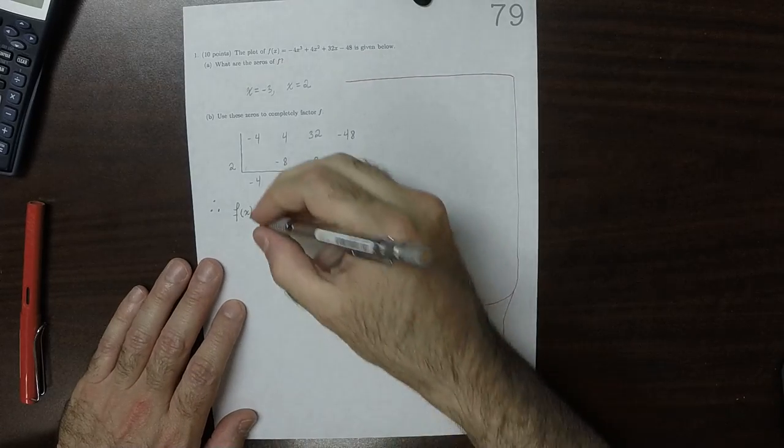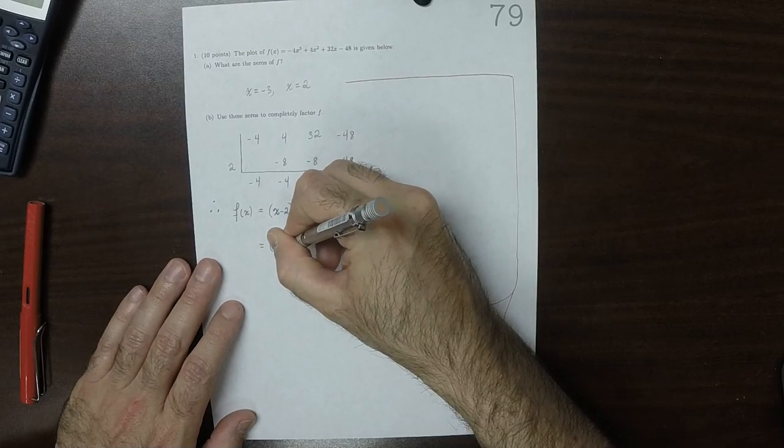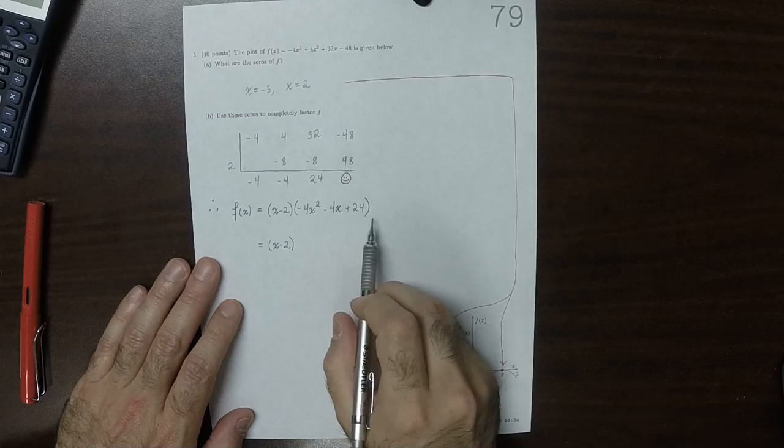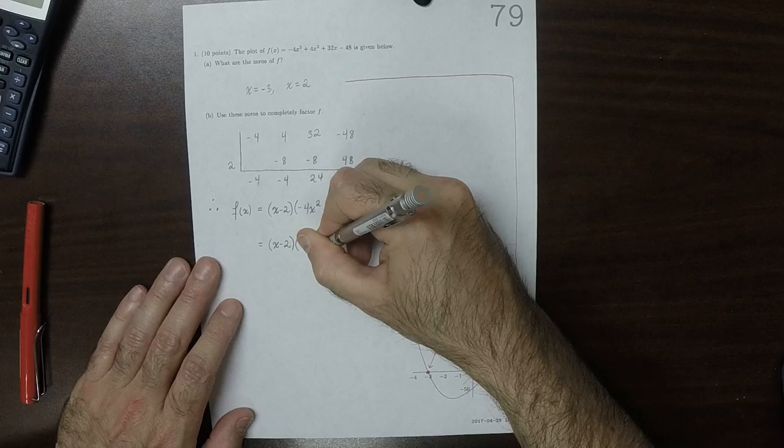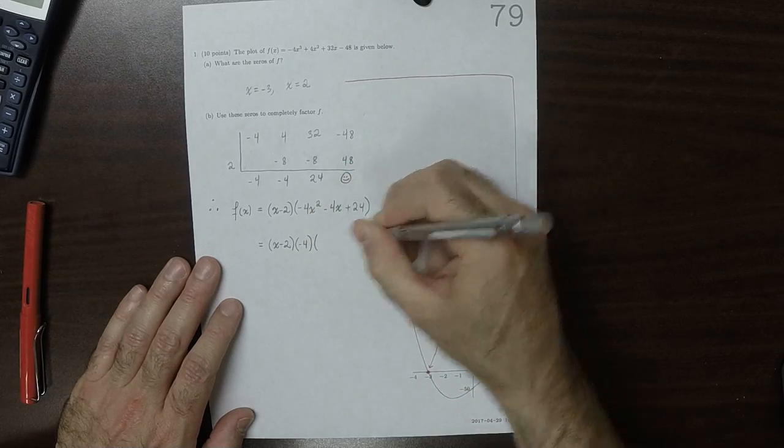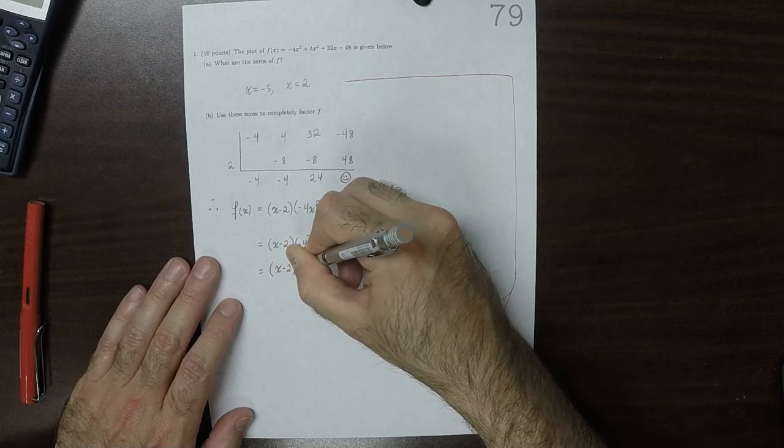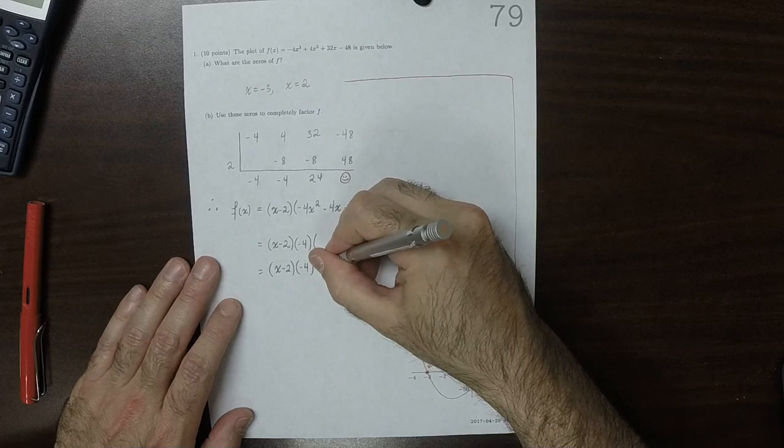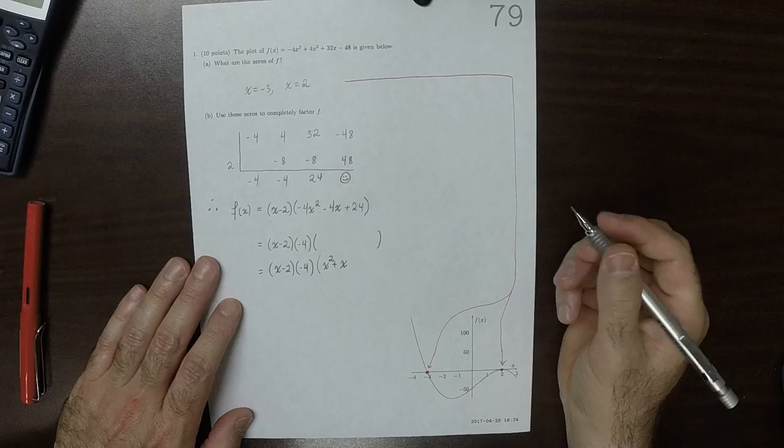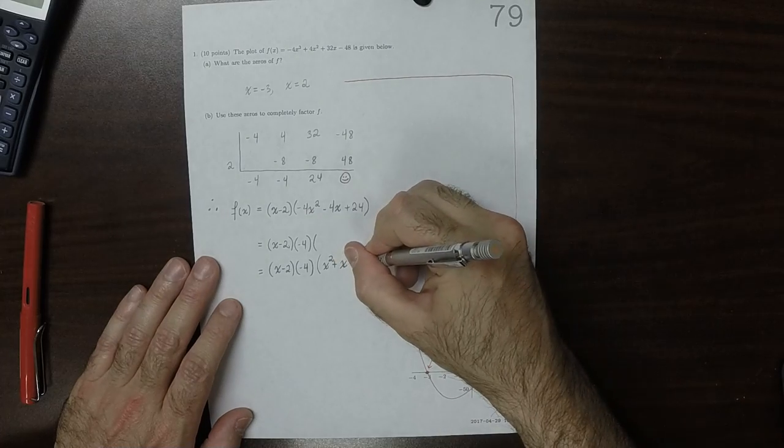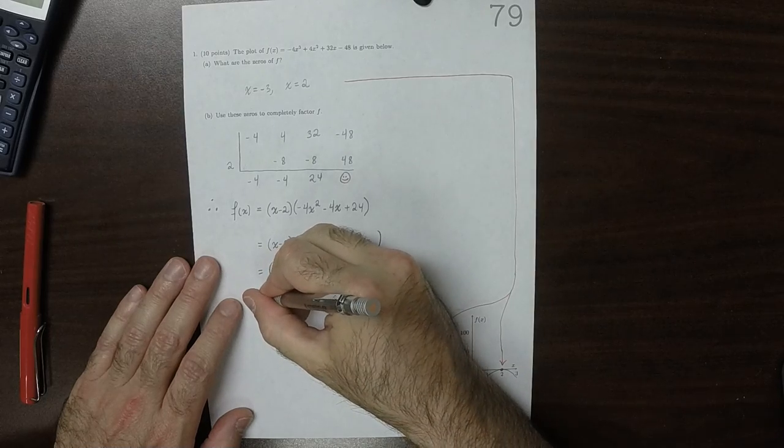That's a quadratic so it can be factored directly. The first thing I'll observe is that -4 can be factored out, leaving x² + x - 6, and that quadratic factors pretty straightforwardly.